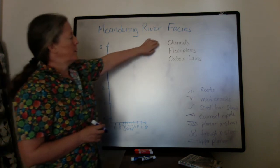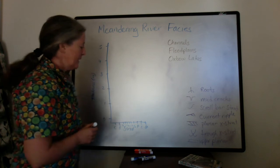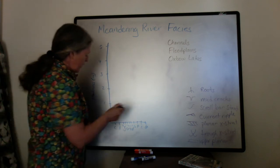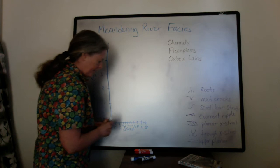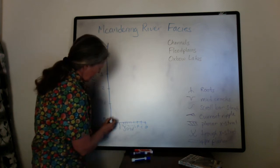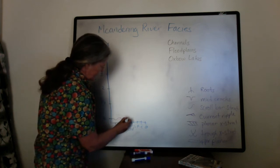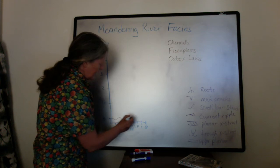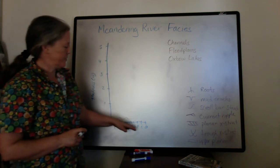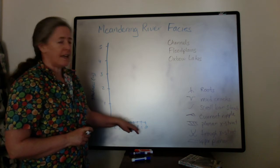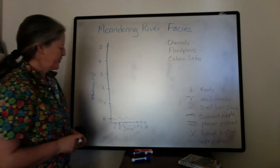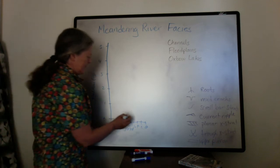The base of the channels has the highest flow and so they almost always are erosive. They have the coarsest grain size, but in most cases, except for very large meandering rivers, the coarsest grain size is occasionally pebbled but more likely to be granule or very coarse sand.